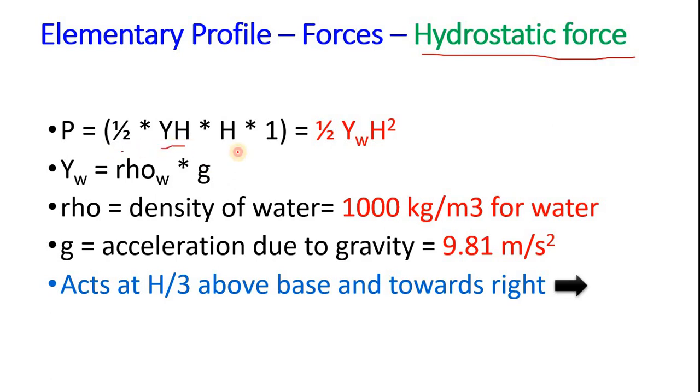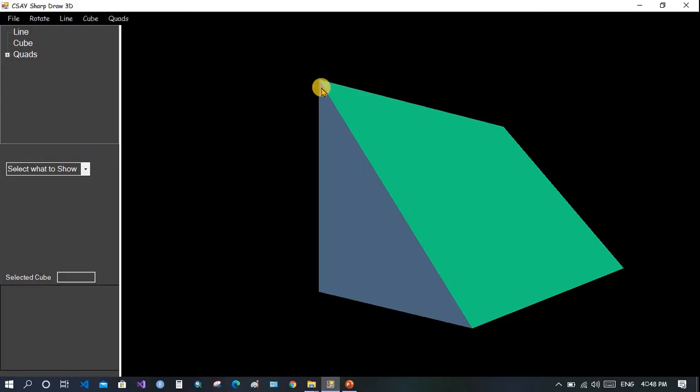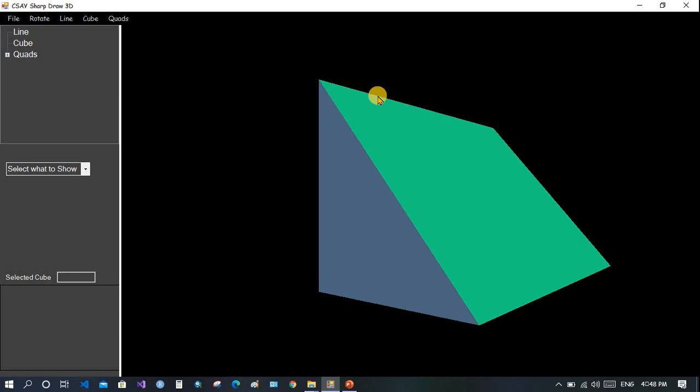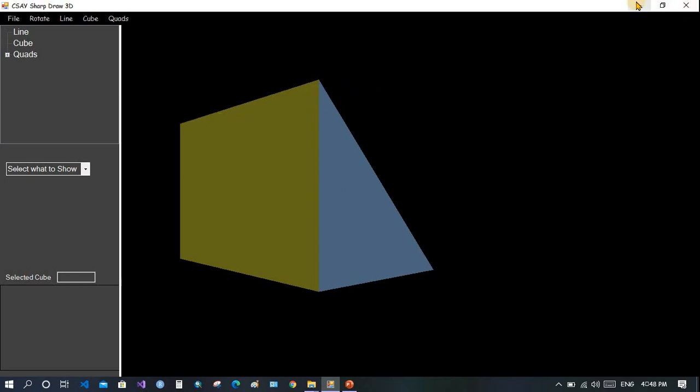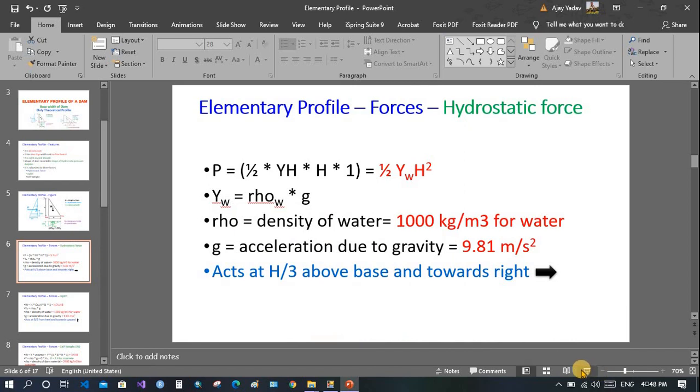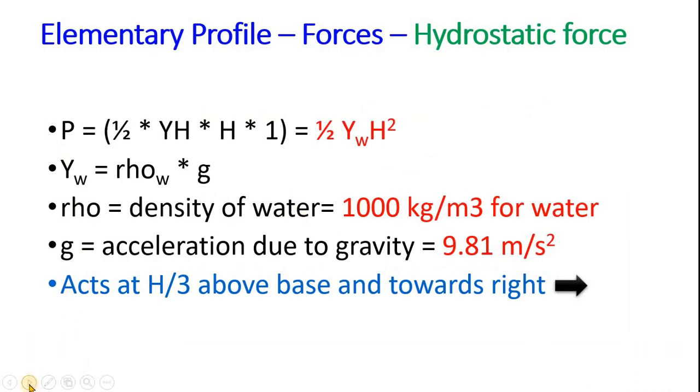Here you can see P equals to 1 by 2 into base into height. Now this one is for unit length of the dam and total we get 1 by 2 gamma of water H square. You can see here this is the dam and this length is considered as unit length, the elementary profile of the dam. So we consider this length as unit length and calculate. Now this gamma can be written as rho of water. Rho means density of water which is 1000 kg per cubic meter and g is acceleration due to gravity 9.81 meter per square second. Now we need to know where the force acts.